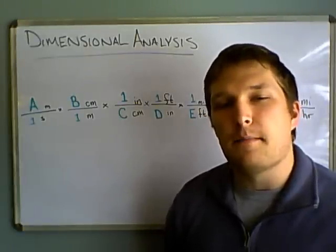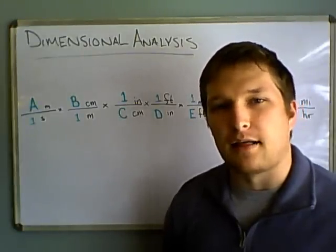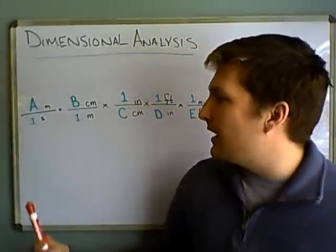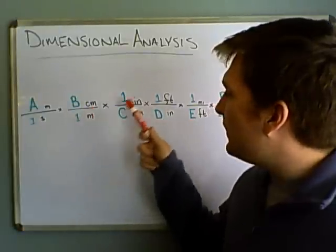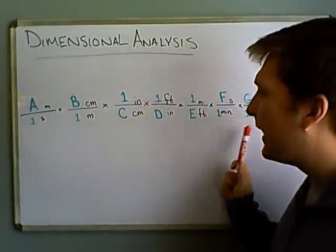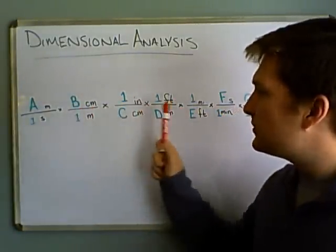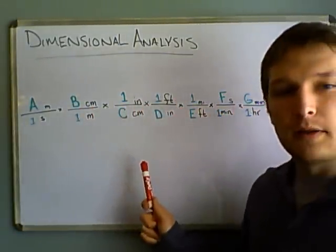So I just want to clarify my method of doing dimensional analysis. Now as you've seen in all the previous videos, we have a bunch of things that end up canceling out and it's a bunch of ratios set up all multiplied by each other.